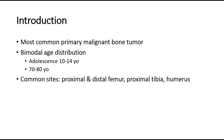There are two main age groups common to have osteosarcoma, with a bimodal age distribution. The first group is adolescents, around 10 to 14 years, and again in the seventh decade, which is around 70 to 80 years old.